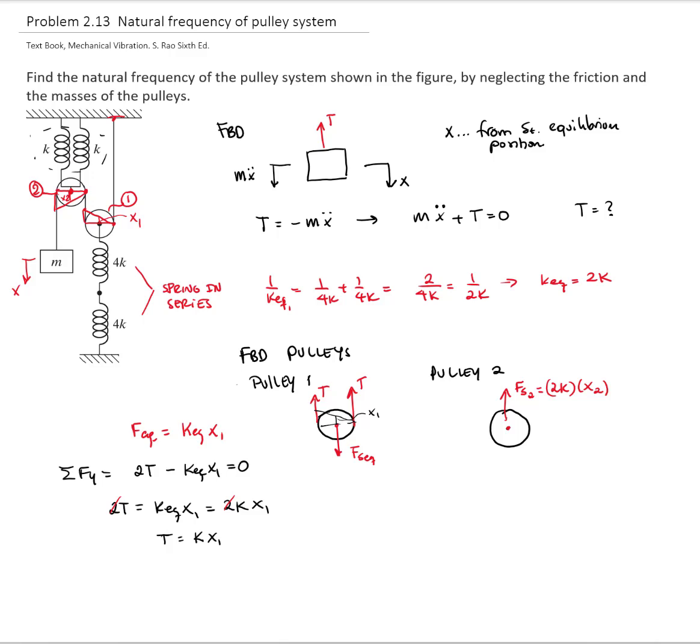And again, I have two tensions. Again, adding forces in the y direction, I have the force of the spring minus 2T is equal to 0. This will be equal to 2k x2 equals to 2T. Again, we get that k x2 is equal to T. Therefore, from here we can say that the displacement x1 is equal to T over k, and the displacement x2 is also T over k.